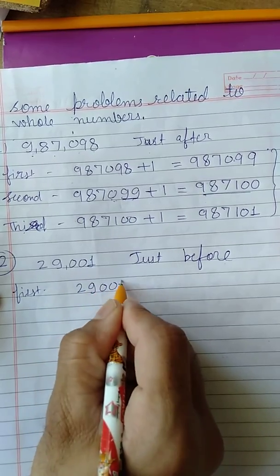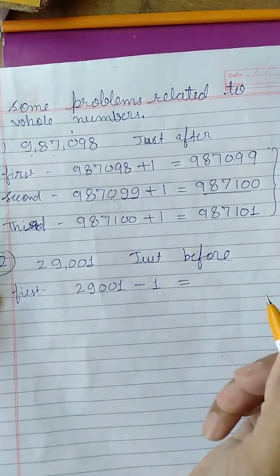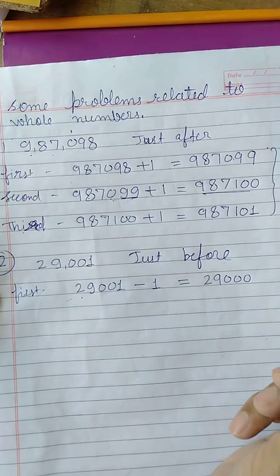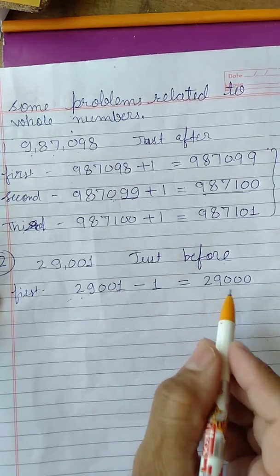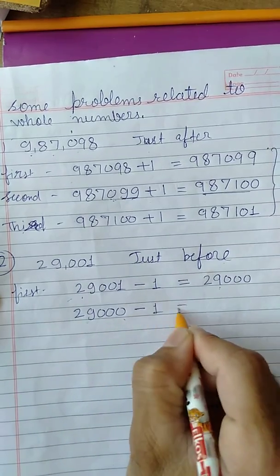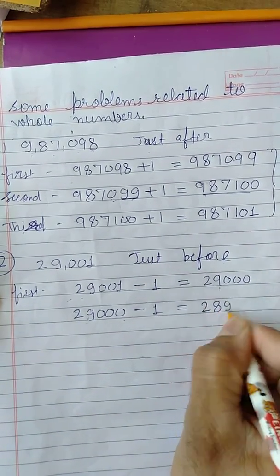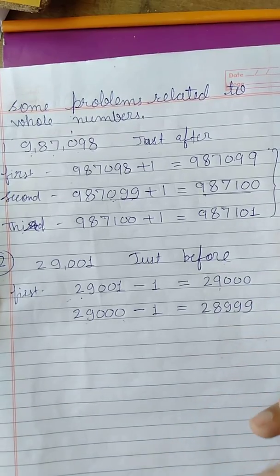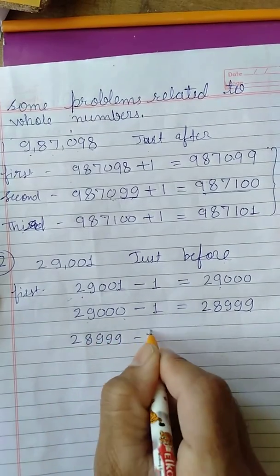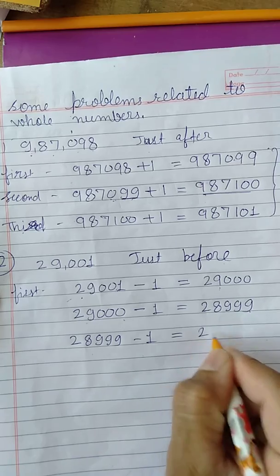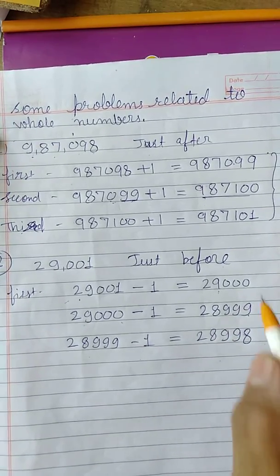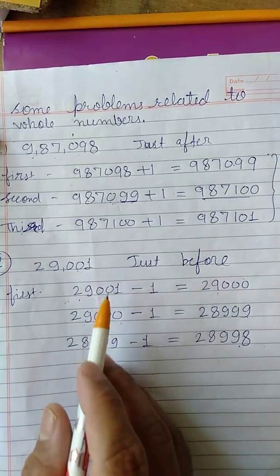We can get the just-before number by subtracting one. So: 29001 - 1 = 29000. Then 29000 - 1 = 28999 — twenty-eight thousand nine hundred and ninety-nine. Then 28999 - 1 = 28998. These three are whole numbers just before the given number.